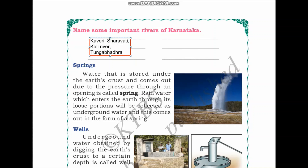Now let us look into springs. Water that is stored under the earth's crust and comes out due to pressure through an opening is called a spring. As seen in the picture, it comes out from the earth's surface with high pressure. Rainwater which enters the earth through its loose portions is collected as underground water and comes out in the form of springs.